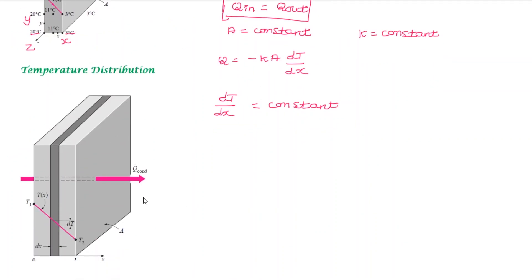Since dT/dx is constant, temperature is directly proportional to x — there is a linear variation in the slab. So the temperature distribution in steady state heat conduction without heat generation in a slab is linear.